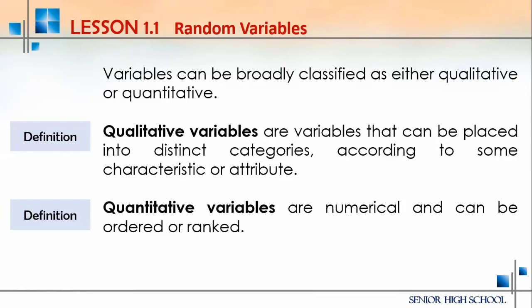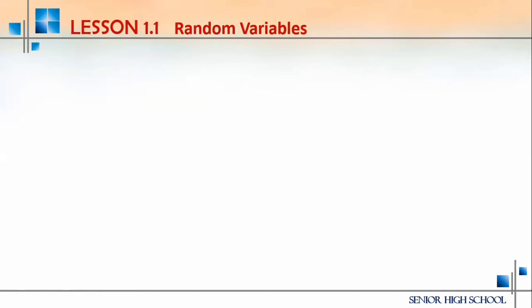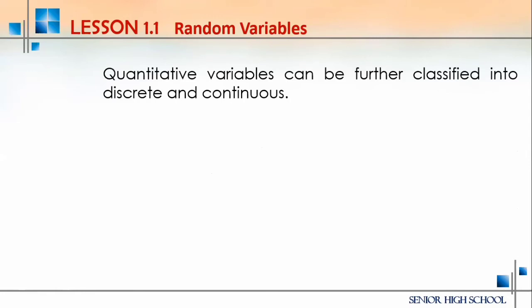Quantitative variables are numerical and can be counted, ordered, or ranked. A good example is grades: 93, 94, 95, 96 — you can rank them from smallest to largest or highest to lowest. Those are the two classifications of variables. For quantitative variables, they can be further classified into two types: discrete and continuous.